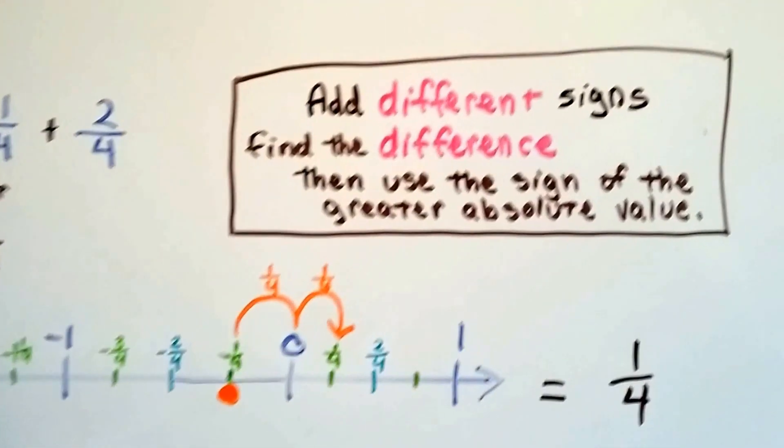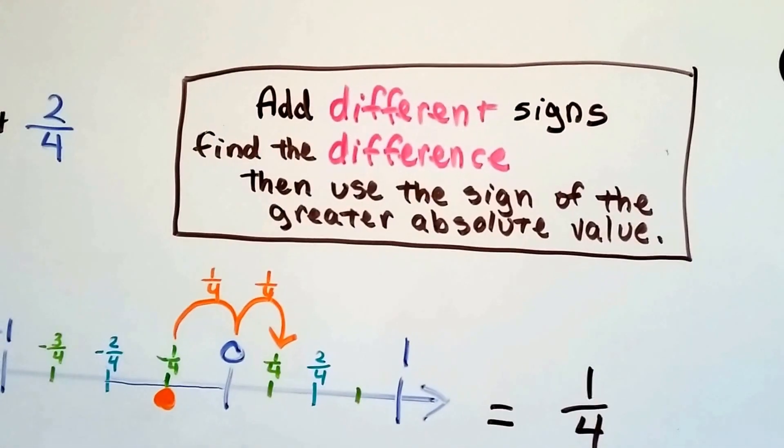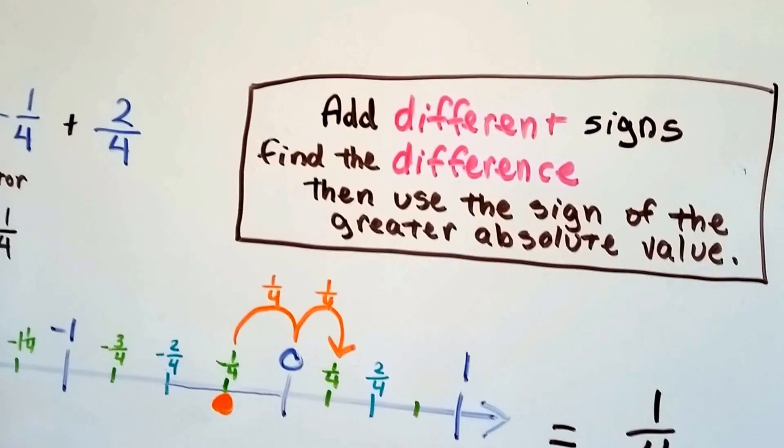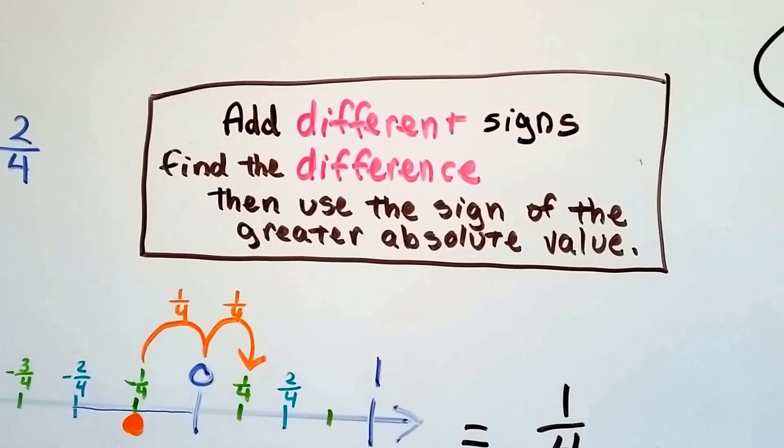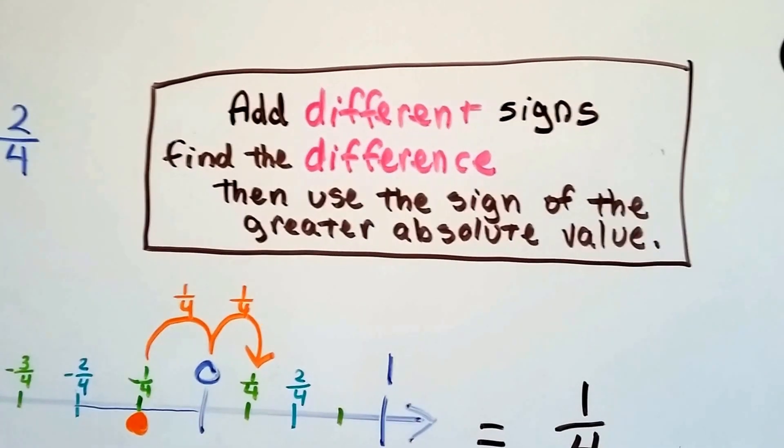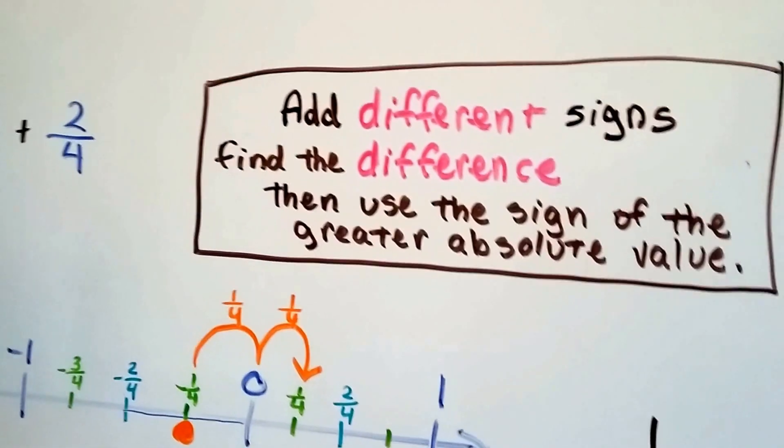Does that make sense? You need to remember this rule. Add different signs, find the difference, then use the greater absolute value, okay? This is really going to help you. And then my two green like ones, like signs, it's like the add-ins, okay?